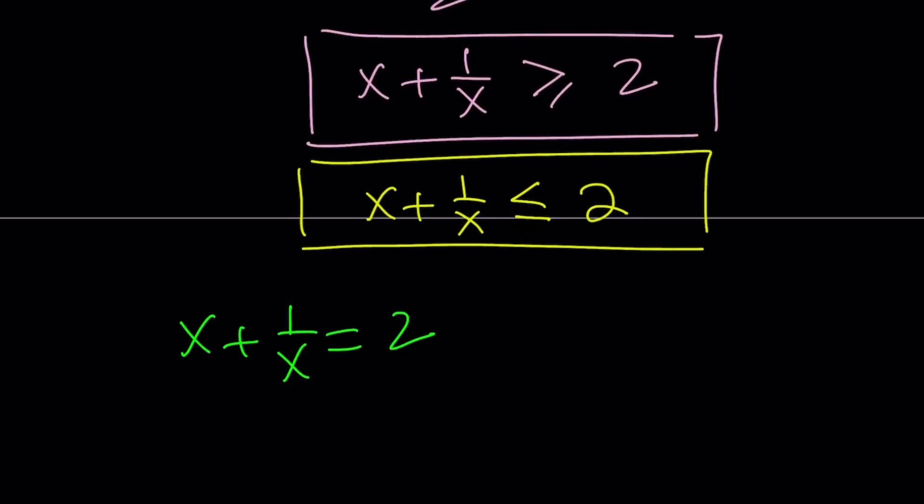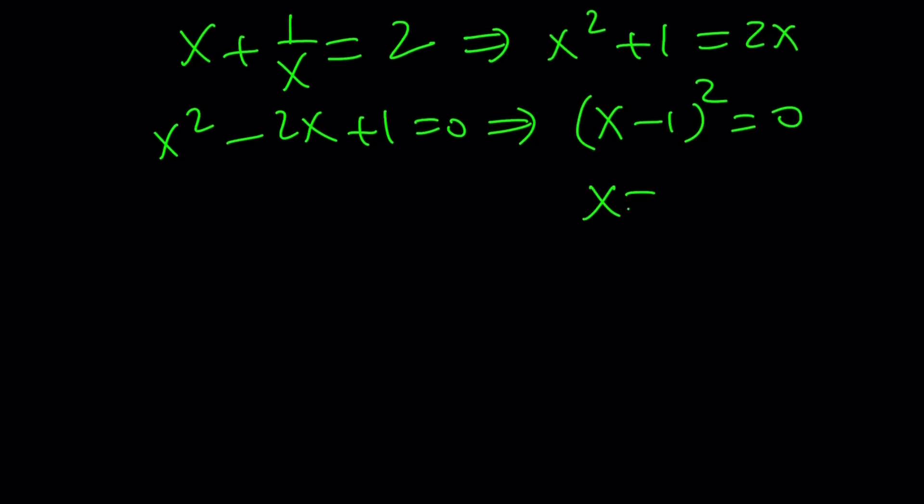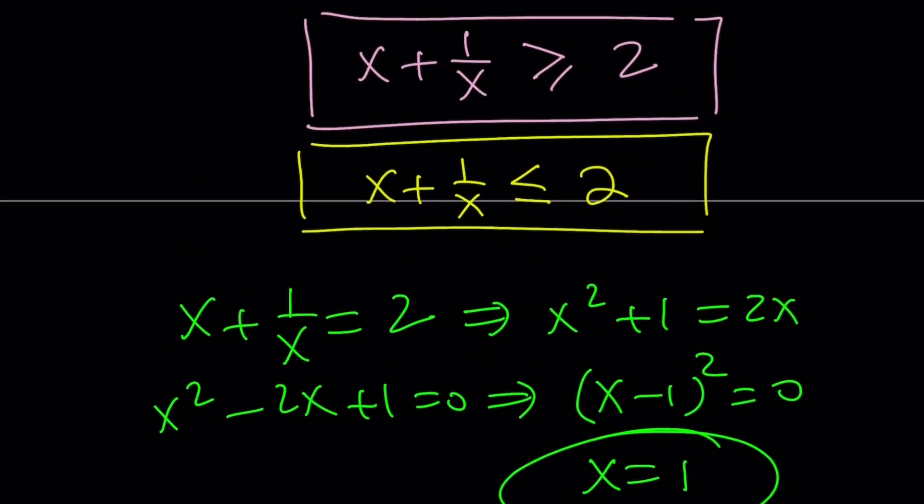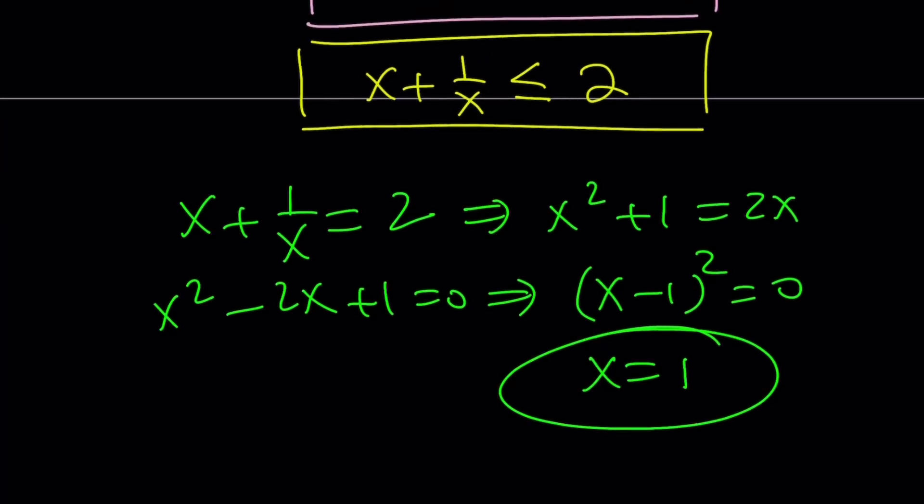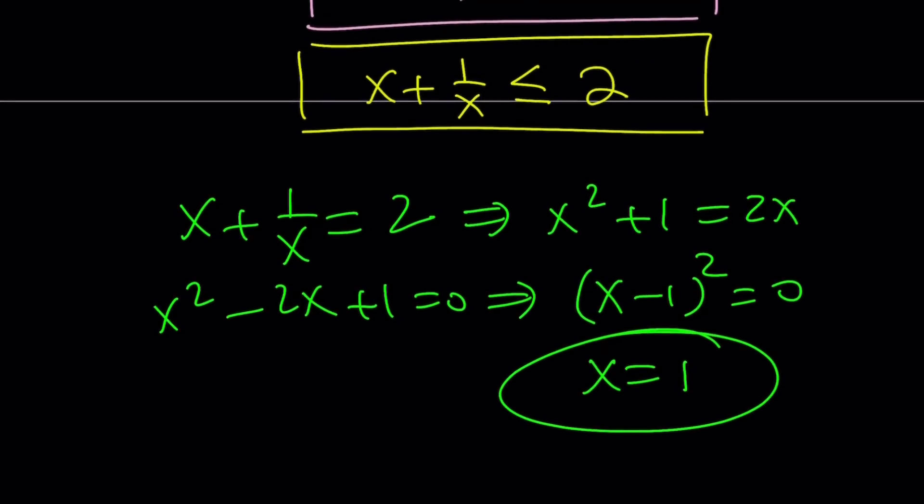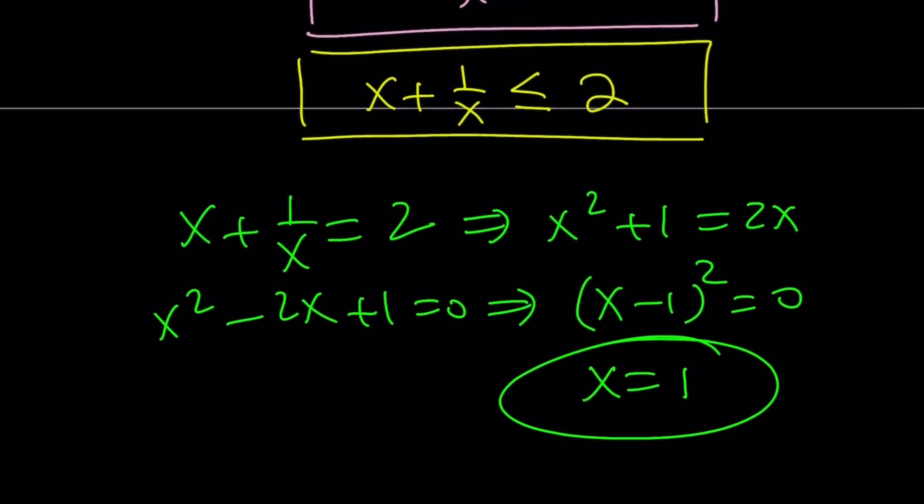And this means the following. Let's go ahead and solve this. If you multiply both sides by x, you get x squared plus 1 equals 2x. Then this gives us x squared minus 2x plus 1 equals 0. But this just implies x minus 1 quantity squared is 0. And that means x equals 1. So that gives us a unique solution for both of these inequalities to be true at the same time. So x equals 1 seems to be the only solution. But is that the only solution?